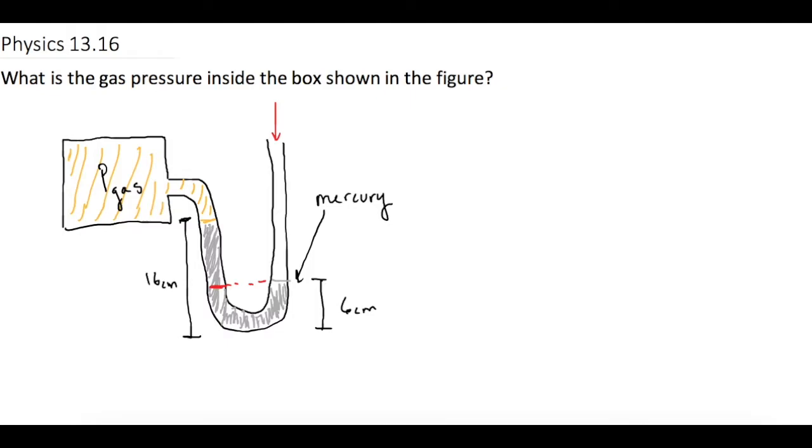So now on this side we have the pressure of the gas pushing down on the mercury. So the equation that we are going to use is the pressure of the gas is equal to the atmospheric pressure.